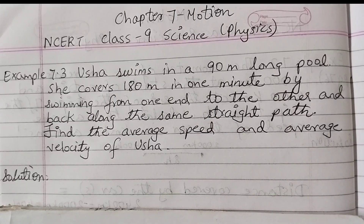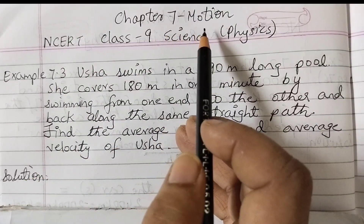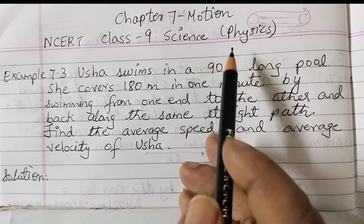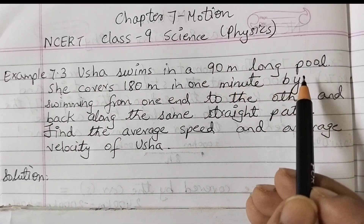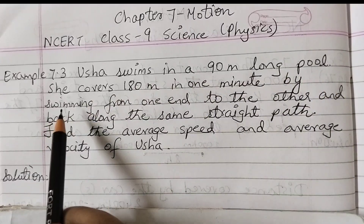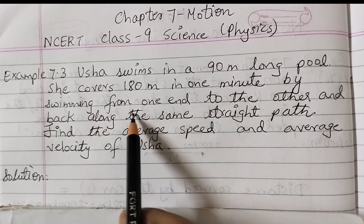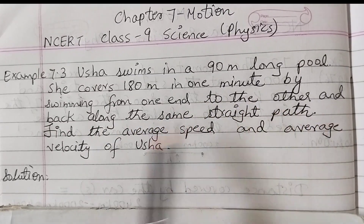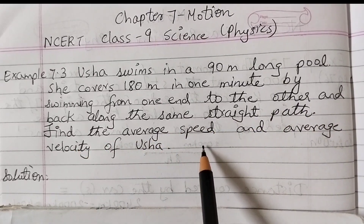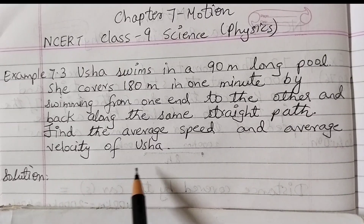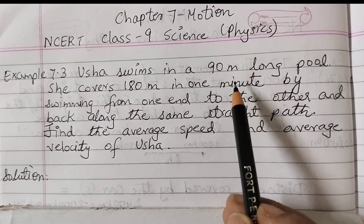Hello students, welcome back to Rosimax Class. Today we shall discuss example number 7.3 of chapter 7 Motion. This is a science problem from physics. Usha swims in a 90-meter long swimming pool. She covers 180 meters in one minute by swimming from one end to the other and back along the same straight path. Find the average speed and average velocity of Usha.